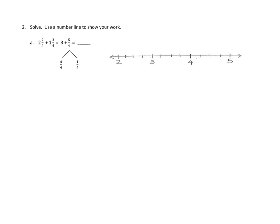Let's solve this problem together using our number line. The way I like to think of the number line is: let's make our big jumps — our whole number jumps — first, and then make our fractional jumps later. The first thing we do is hop all the way out to our first whole number. That's two. And I want to add the other whole number, which is one more, so I go from two out to three. Now we've got our whole numbers. Let's start adding up our fractional parts — we need to hop out two more fourths.